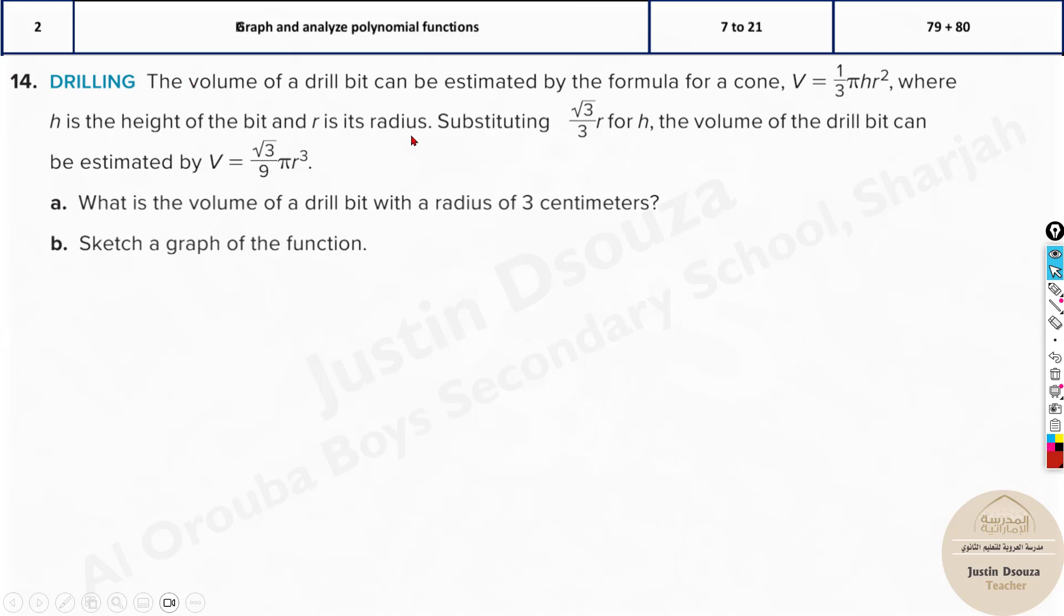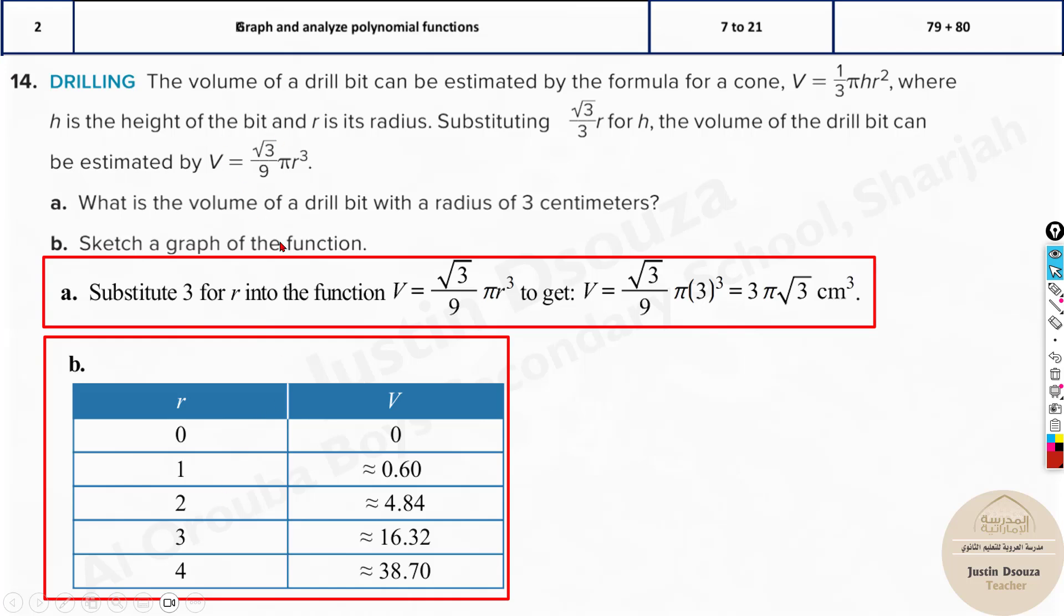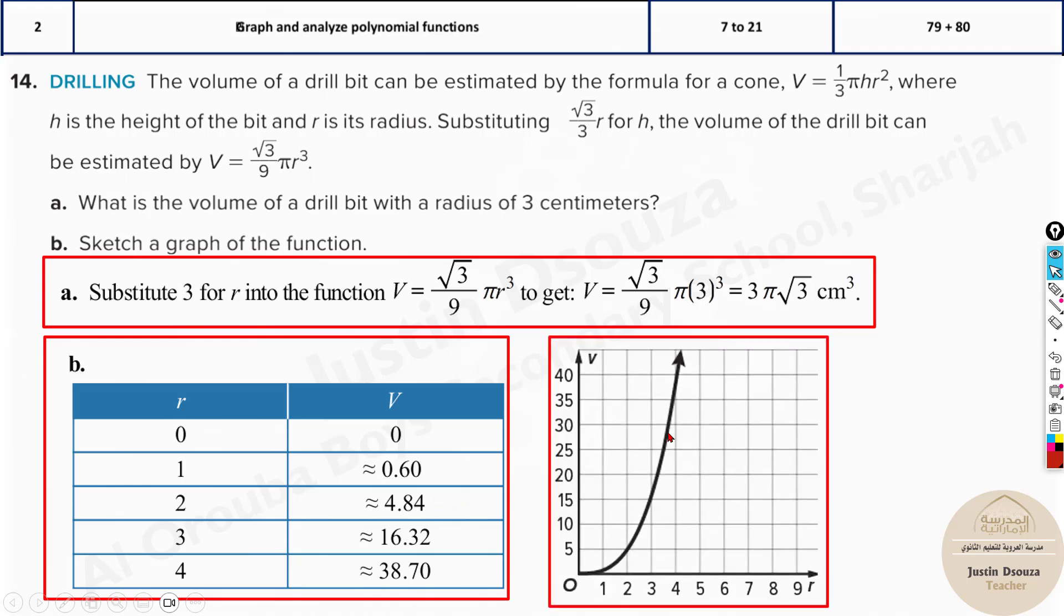Similarly, there's another problem. The volume of a drill bit can be estimated by the formula for a cone. V is equal to 1 third πhr². Where h is the height of the bit and r is the radius. Substituting √3 by 3 r for h. The volume of the drill bit can be estimated over here. Now, instead of the height, they've substituted this value here. And you've got the new equation. What is the volume of the drill bit with the radius 3 centimeters? Just you've substituted the r as 3 and solve for the volume. Then you need to sketch the graph. Just like what we did a while ago. Put it in the calculator and graph it out. Take some values. Say 0 to 5 or 0 to 7 or something. And then graph it out.